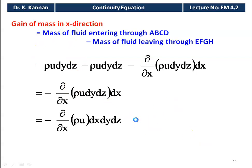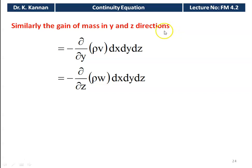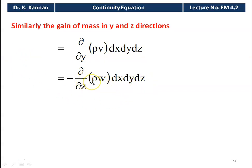Similarly, in the y direction the mass gain is minus (∂/∂y)(rho V) times dx dy dz, and in the z direction it is minus (∂/∂z)(rho W) times dx dy dz. The mass of fluid entering and leaving in the x, y, and z directions has been calculated, and we conclude with the gain of mass in all three directions.